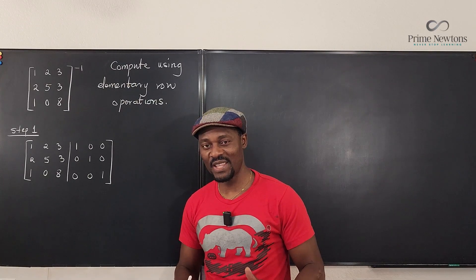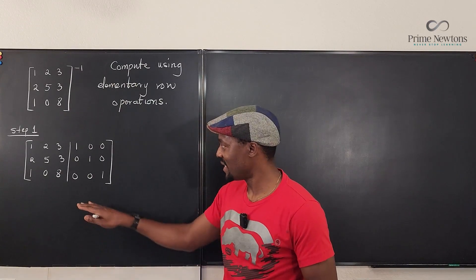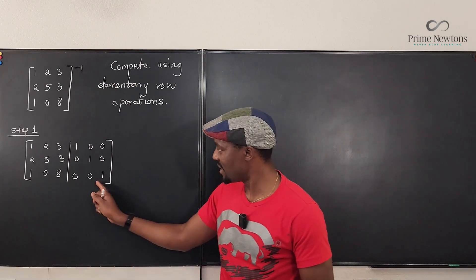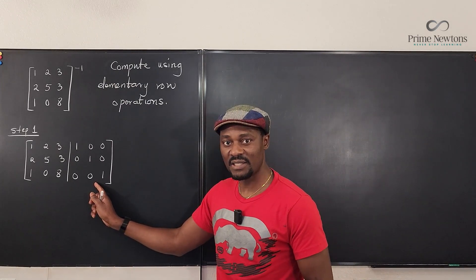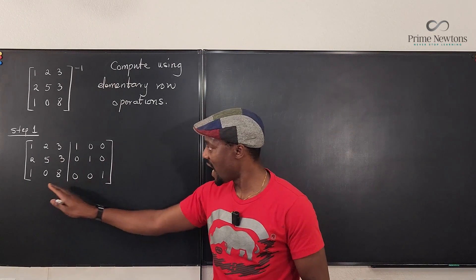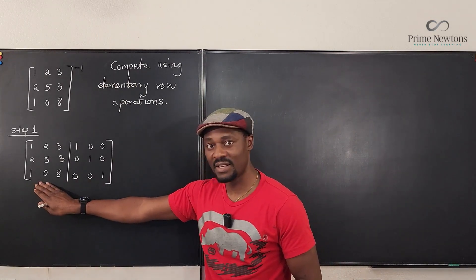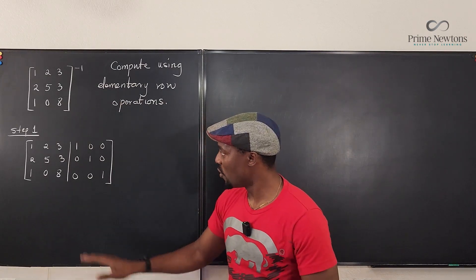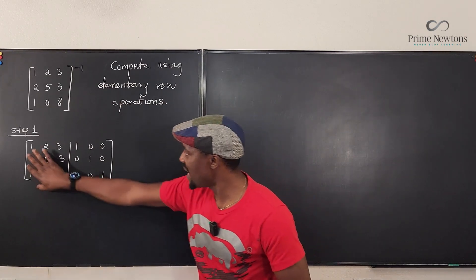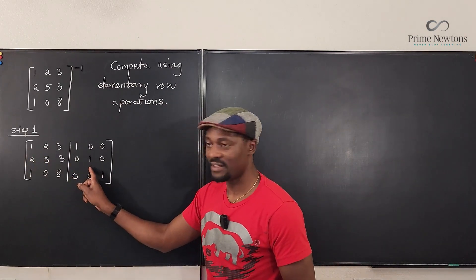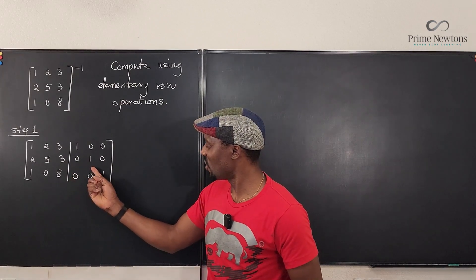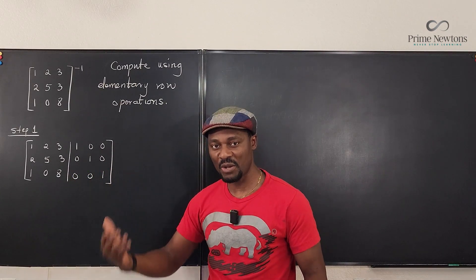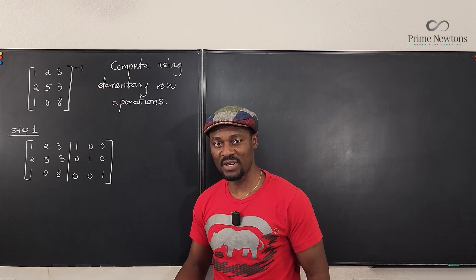The very first thing that you do is write both matrices side by side. This is the identity matrix for a 3x3, and this is the matrix you're trying to invert. We're going to make this look like the identity matrix, and eventually whatever is on the right-hand side becomes the inverse matrix.